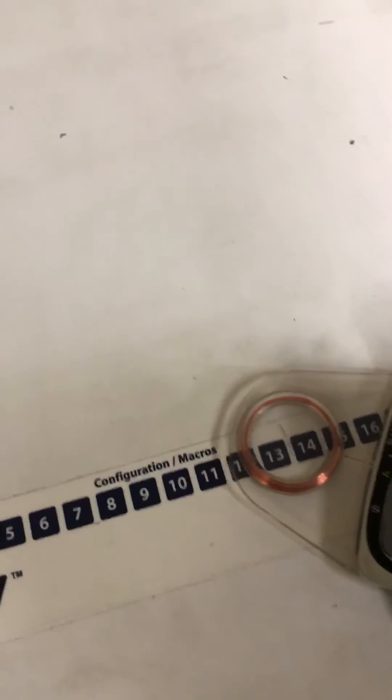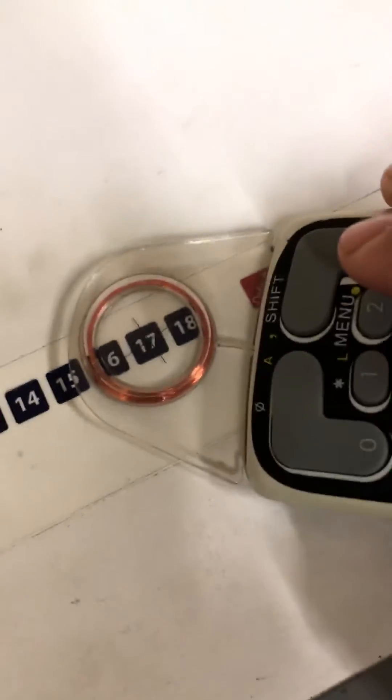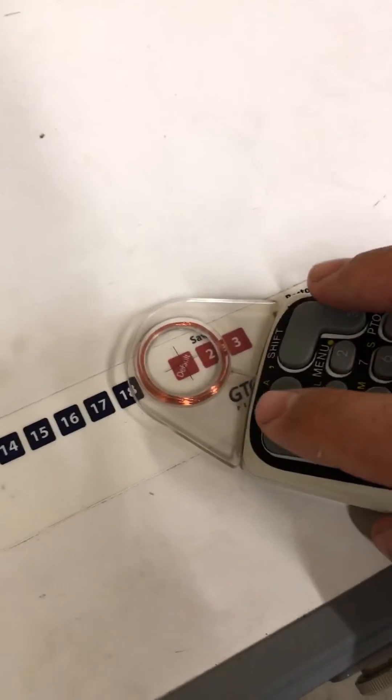So fourteen is off, fifteen, sixteen on, seventeen off, eighteen off. What you do is you click this default button right here and you click save.